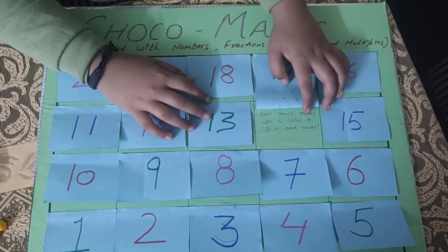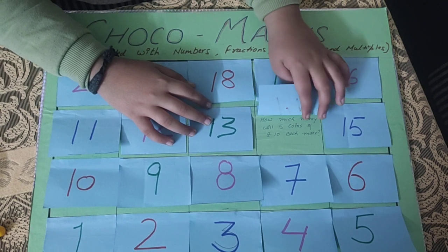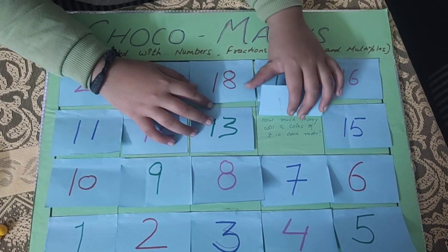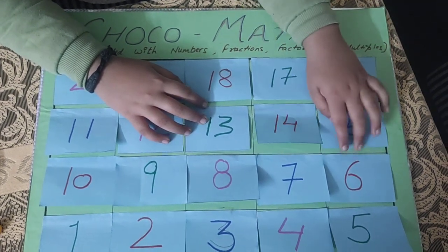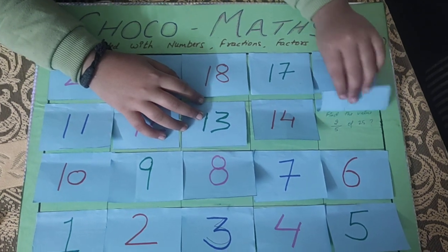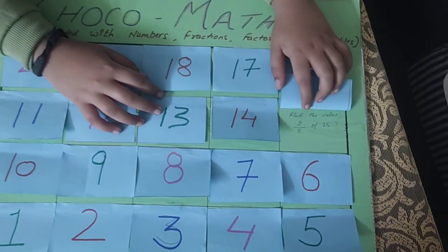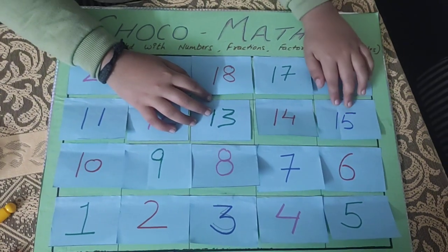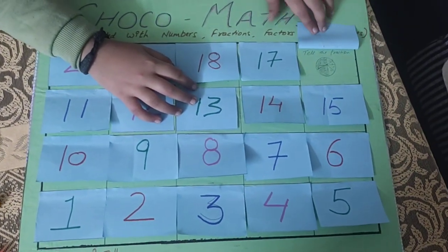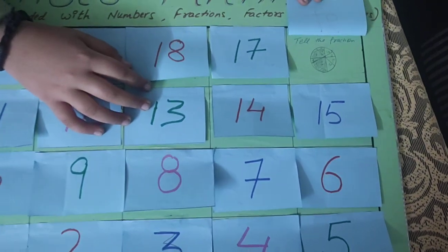How much money will 5 coins of rupees 10 each make? Find the value 2 by 5 of 25. Tell the fraction.